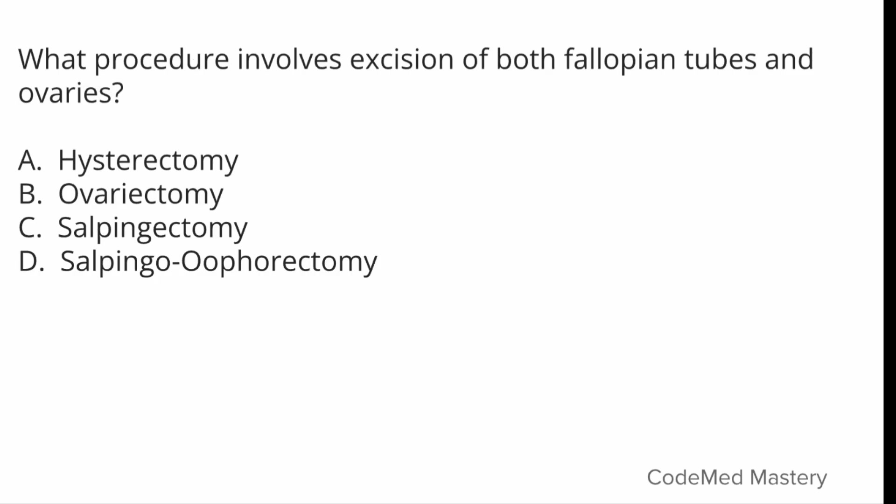Next question: what procedure involves excision of both fallopian tubes and ovaries? Option A: Hysterectomy, Option C: Salpingectomy, Option D: Salpingo-oophorectomy. The right answer is Option D: Salpingo-oophorectomy. Salpingo refers to fallopian tubes, oophor refers to ovaries, and -ectomy means surgical removal. Hysterectomy removes the uterus, oophorectomy removes one or both ovaries, and salpingectomy removes the fallopian tubes.